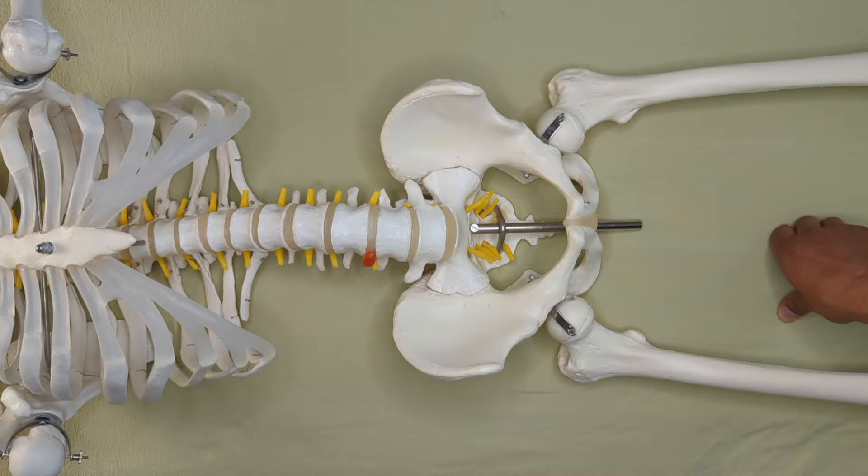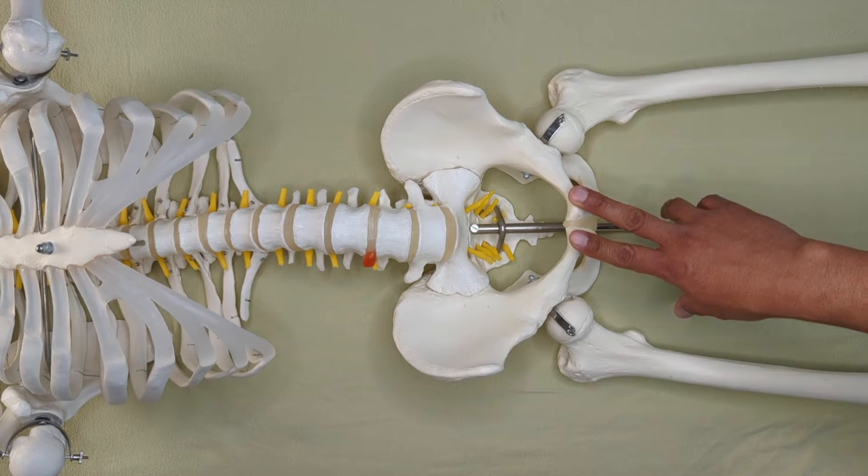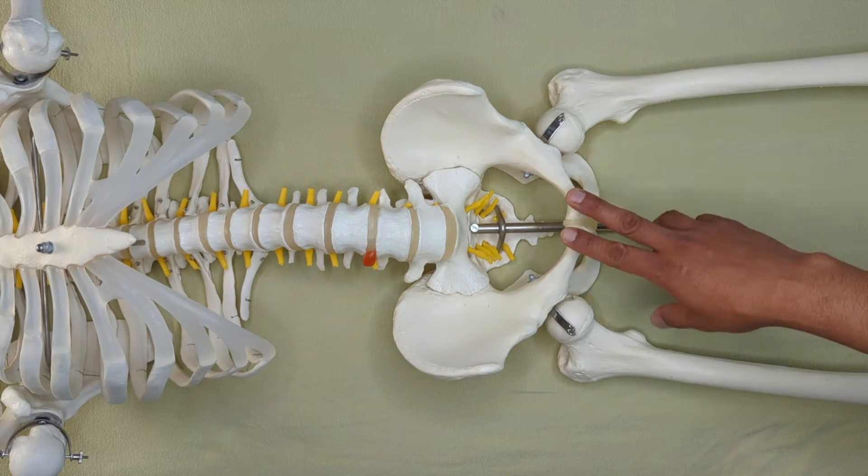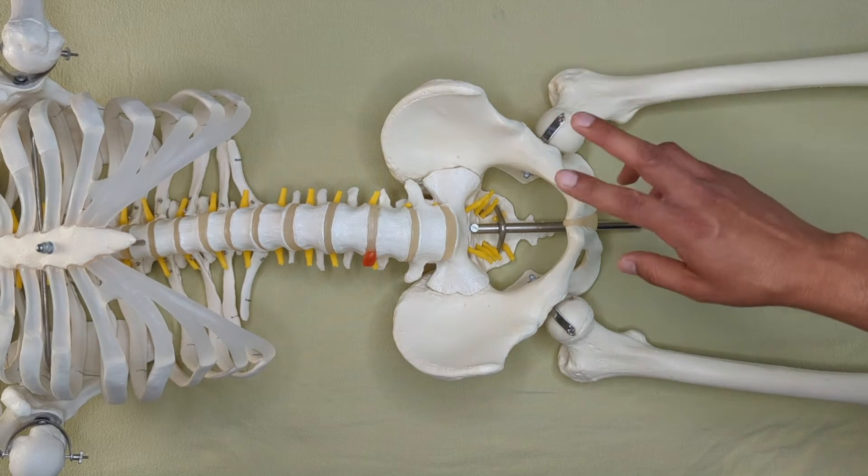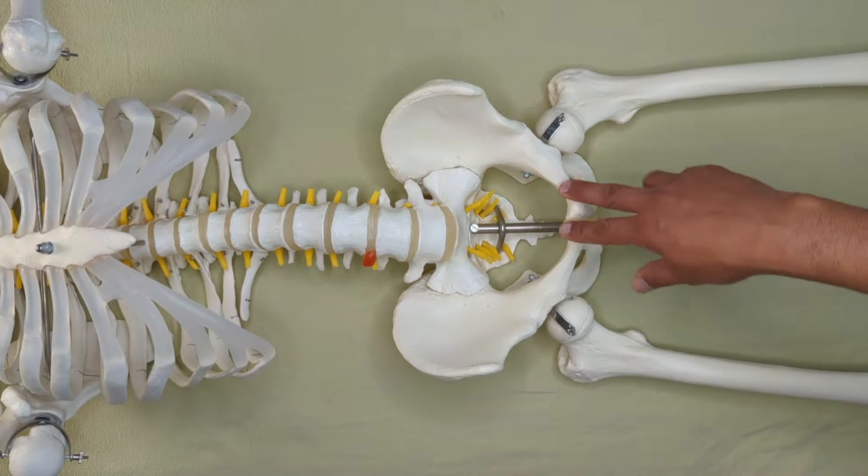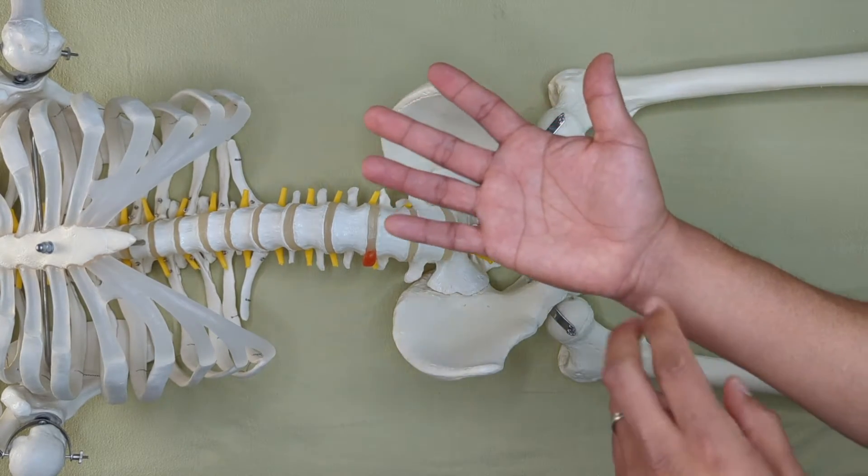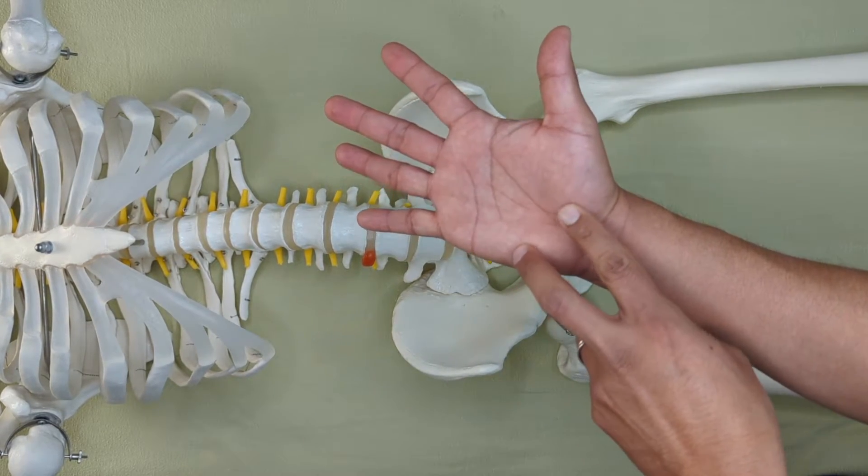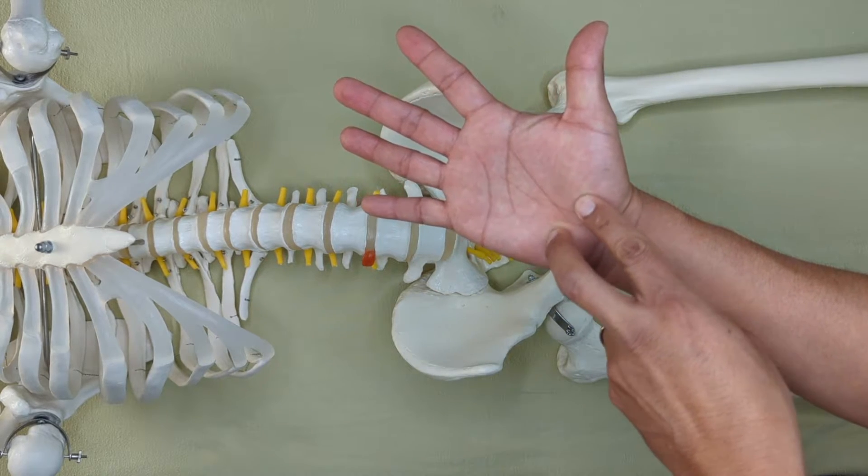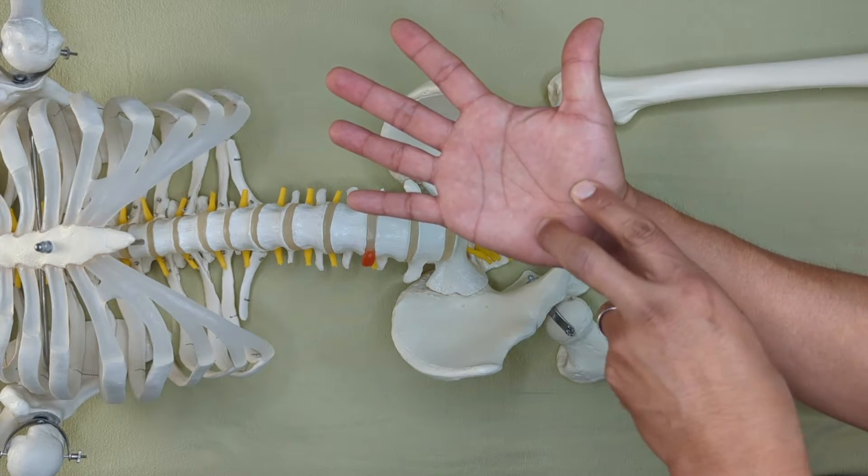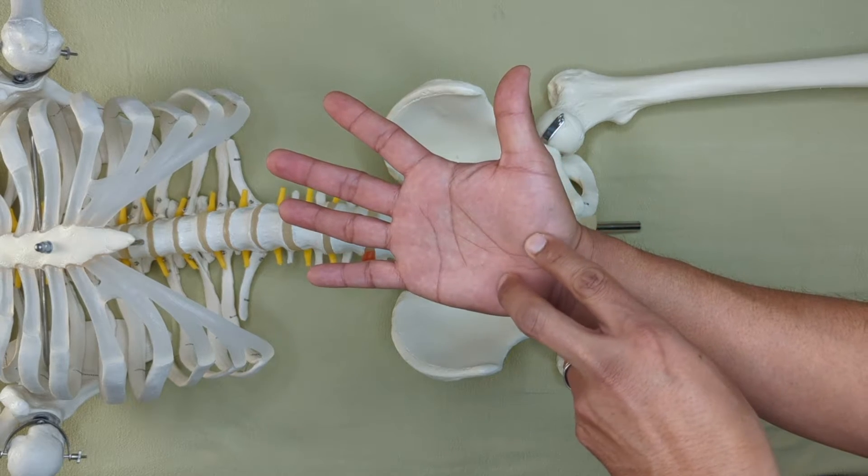That being said, to palpate pubic bone, the way I do it is I actually don't even use my fingers. Sorry, Mr. Otto, I'm using my fingers to do it on you. But I use the heel of my palm, and I imagine the pubic bone being on either side of the heel of my palm right here.